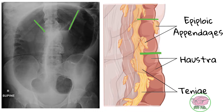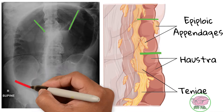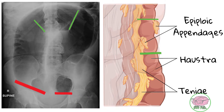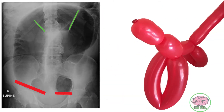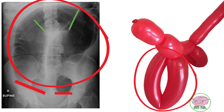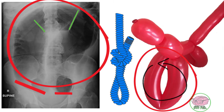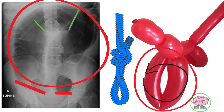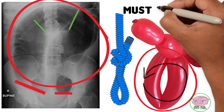We can also see that the gas ends at the base of the inverted U, reminiscent of the balloon animals clowns make by twisting and turning the balloon upon itself to create different shapes.